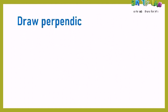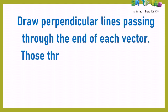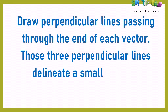The next step is to draw perpendicular lines passing through the end of each vector — each of the three vectors. Those three perpendicular lines will delineate a small triangle. If you draw lines that are perpendicular to the end of each vector, those lines will make a small triangle.